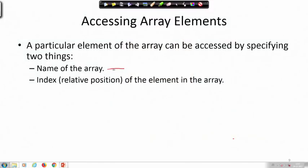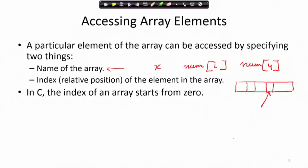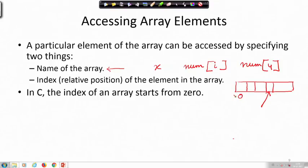We now know that an array is identified by a name, like x or num, and an index such as num[i] or num[4], num[5] and so on. By this index we identify which particular element of the array we are referring to. In C, the array index starts from 0.